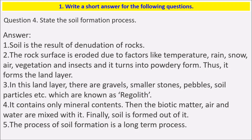State the soil formation process. Soil is the result of denudation of rocks. The rock surface is eroded due to factors like temperature, rain, snow, air, vegetation, and insects, and it turns into powdery form, forming land layers. In these land layers there are gravels, smaller stones, pebbles, and soil particles, known as Regolith. It contains minerals, biotic matter, air, and water mixed with it, and finally soil is formed. The process of soil formation is a long-term process.